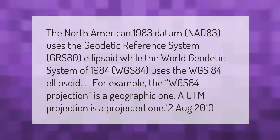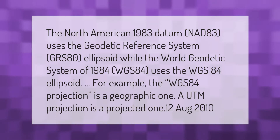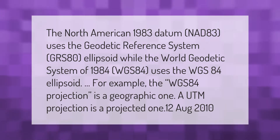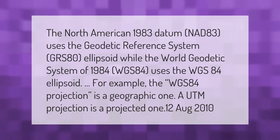The North American 1983 Datum, NAD83, uses the Geodetic Reference System GRS-80 ellipsoid, while the World Geodetic System of 1984, WGS-84, uses the WGS-84 ellipsoid.